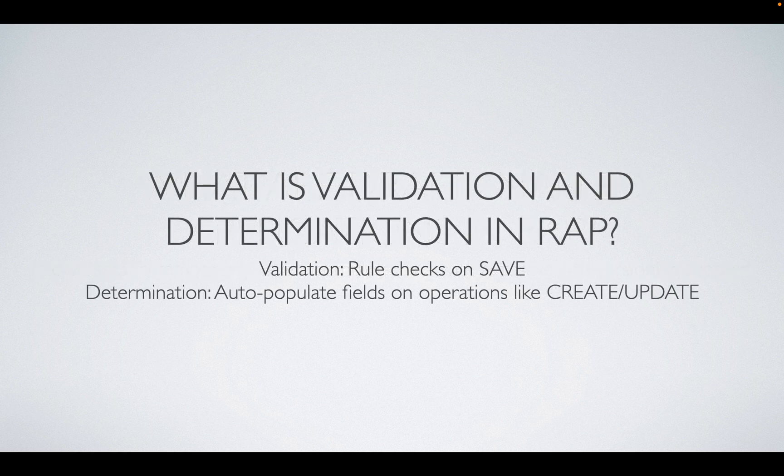What is validation and determination in RAP? Validation refers to business rule checks during save and modify operations. Determination is used to auto-populate or adjust fields during operations like create and update. Validations can be applied at various levels to ensure data security and integrity.